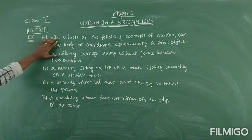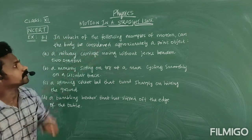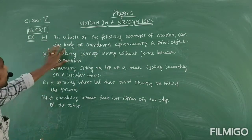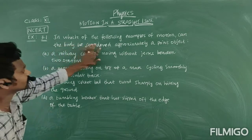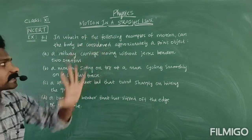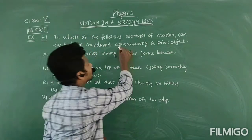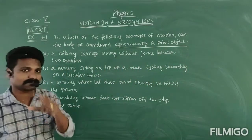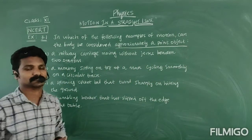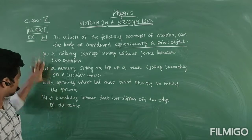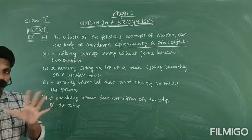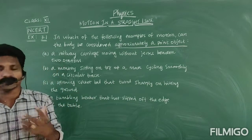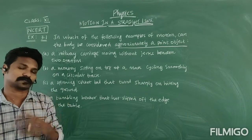In which of the following examples of motion can the body be considered approximately a point object? That word 'approximately' is important. Four examples are given, so you must analyze them, then you can see whether it is a point object or not.